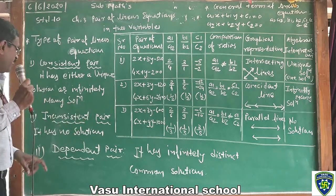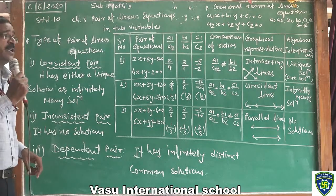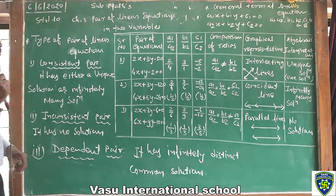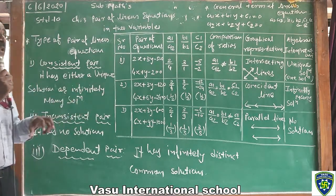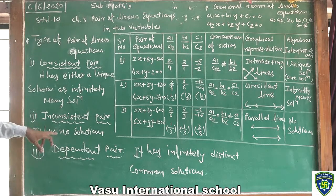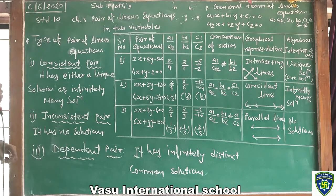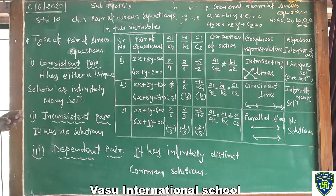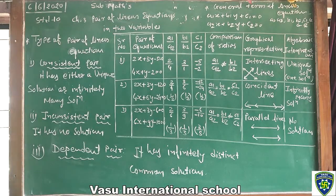Inconsistent pair: it has no solution. No solution means the lines are parallel. Now, Dependent pair: it has infinitely distinct common solutions.